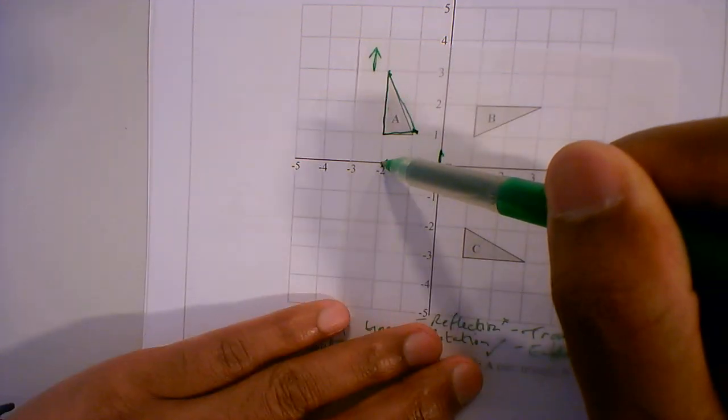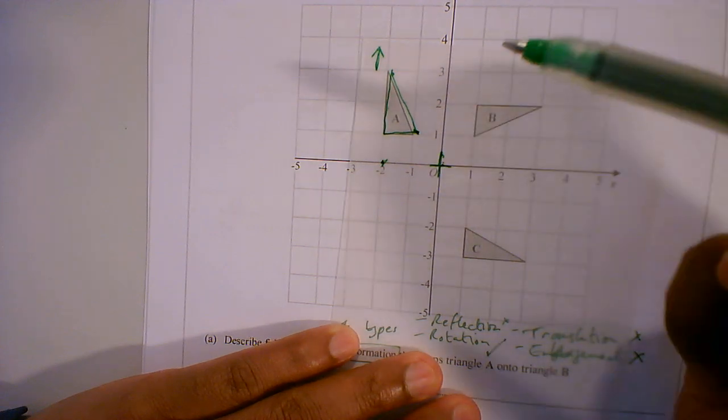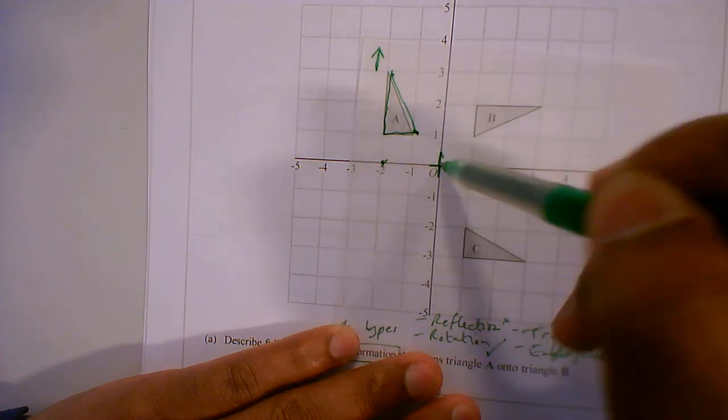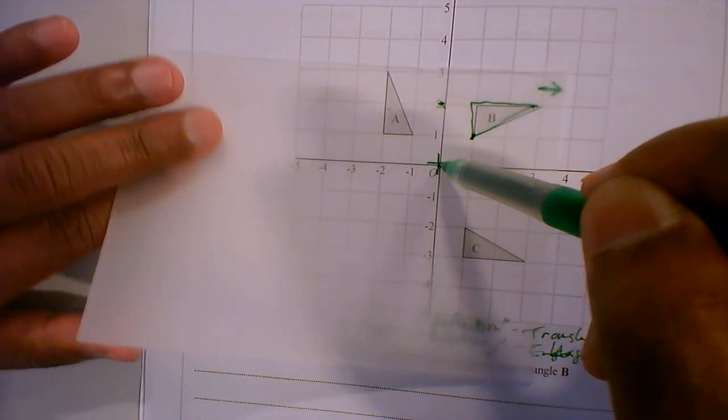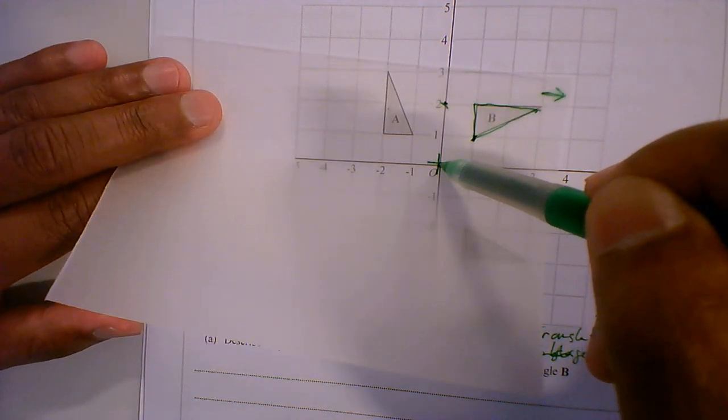Now one part I haven't tried is the origin, so I'm going to put my pen on the origin. And you can see it's mapped onto B. So this fits exactly.